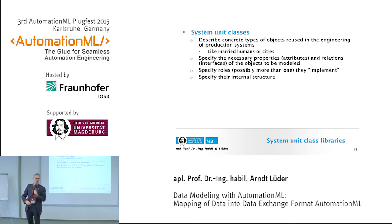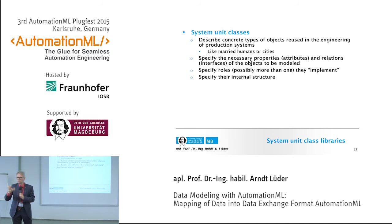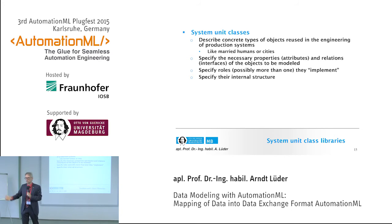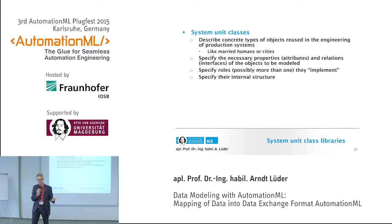If we have that, we can start with our system unit classes. The system unit classes should be seen as concrete types of objects you reuse within the engineering — a kind of product catalog. For example, in the case of electrical planning, the different objects used: drives, sensors, PLCs, clamping lines, and so on. We can specify them, give them properties, attributes, and relations via interfaces, and specify the roles they implement.